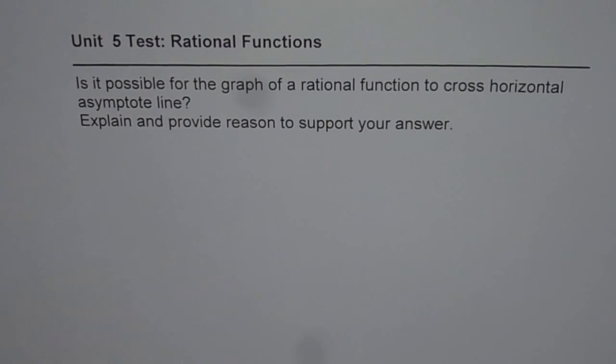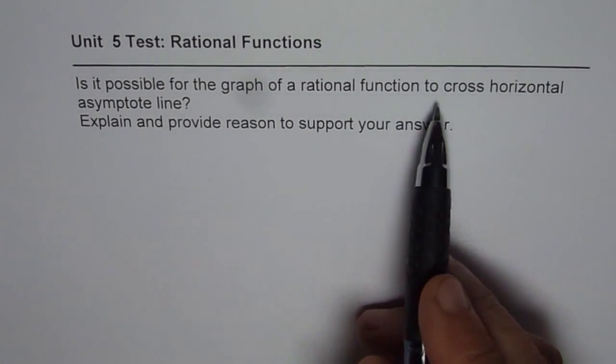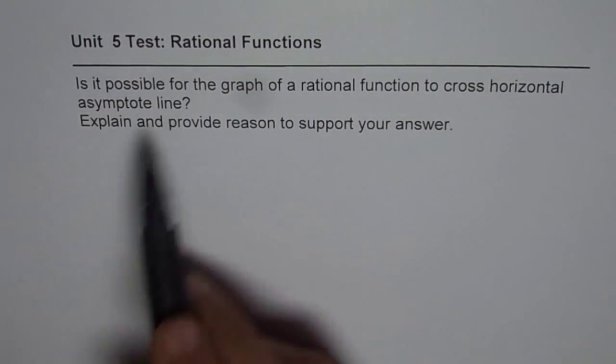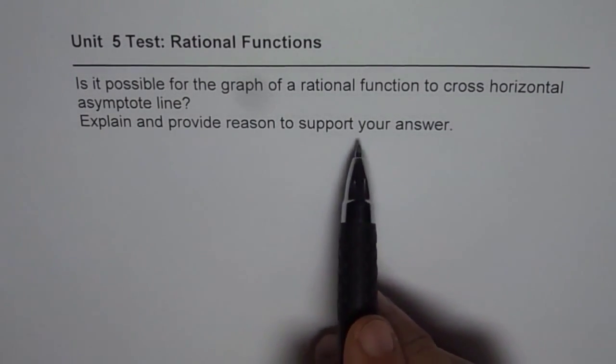I am Anil Kumar sharing with you some good questions to prepare you for the test. Unit 5 Rational Functions. Question here is, is it possible for the graph of a rational function to cross horizontal asymptote line? Explain and provide reason to support your answer.